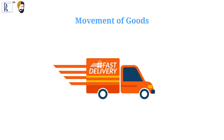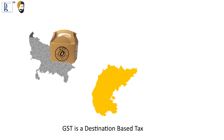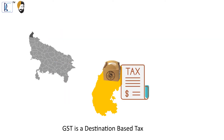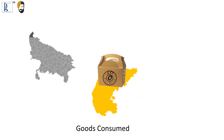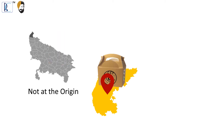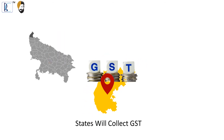Hello guys, welcome to our YouTube channel. Today we shall be discussing the concept of place of supply where there is movement of goods. GST is a destination-based tax — the goods will be taxed at the place where they are consumed and not at the origin. So the state where they are consumed will have the right to collect GST.